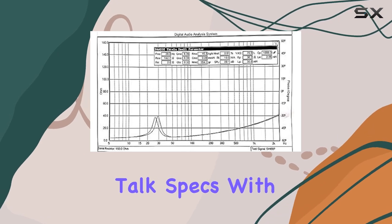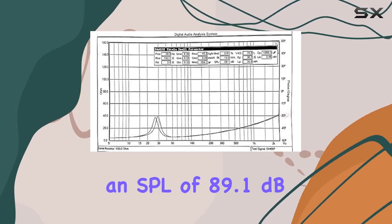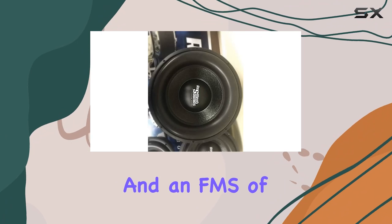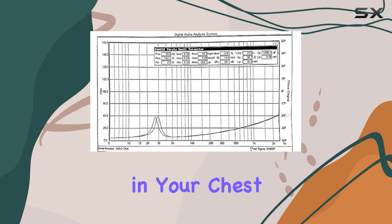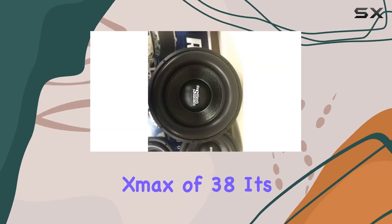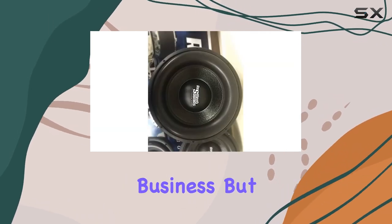Now, let's talk specs. With an SBL of 89.1 dB and an FMS of 29.3 Hz, the Team 15 packs a punch that you can feel in your chest. And with a ZMAX of 38, it's ready to push air like nobody's business.